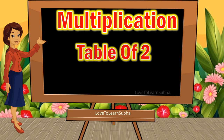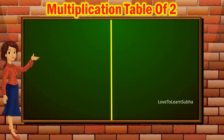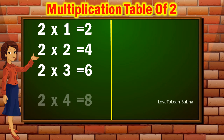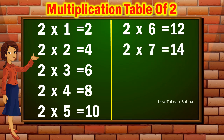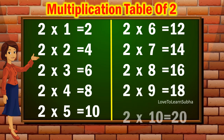Now, let's repeat it once again. 2 1s are 2, 2 2s are 4, 2 3s are 6, 2 4s are 8, 2 5s are 10, 2 6s are 12, 2 7s are 14, 2 8s are 16, 2 9s are 18, 2 10s are 20.